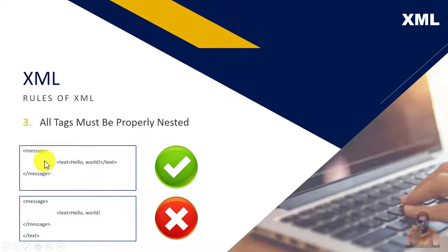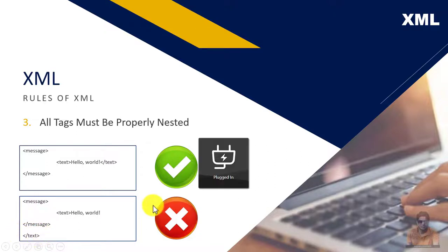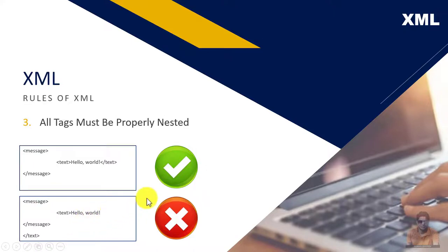The third rule is that all tags must be properly nested. You can see in the first example that the 'message' tag and 'text' tag are properly nested. In the second example, the 'message' tag is nested but the 'text' element is not nested properly. This is another rule for writing an XML file.